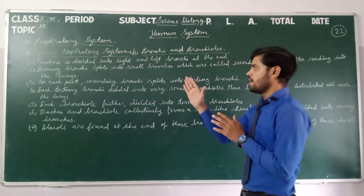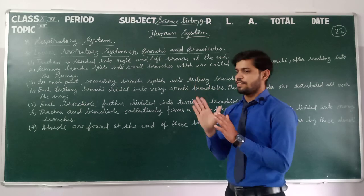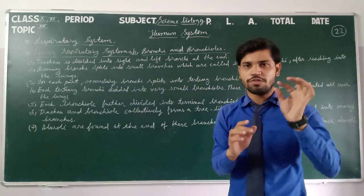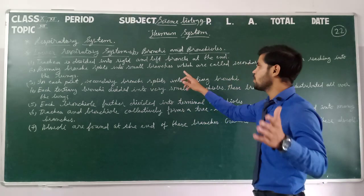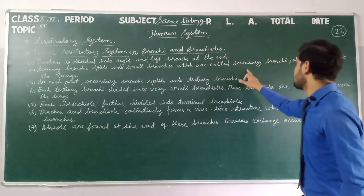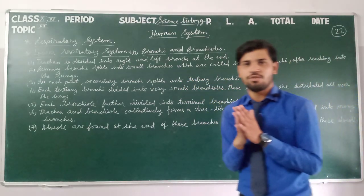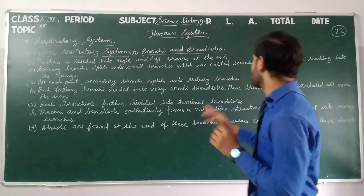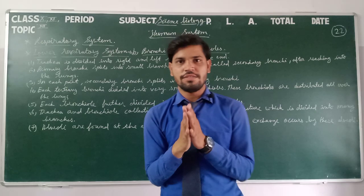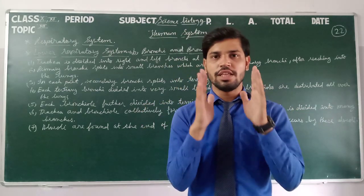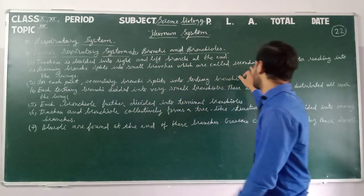Primary bronchi split into smaller branches, which are secondary bronchi, after reaching into the lungs.